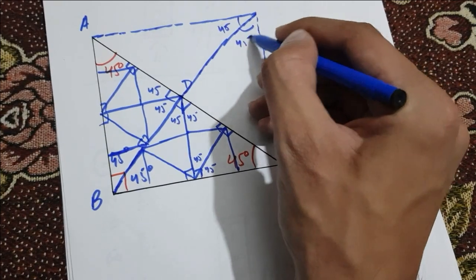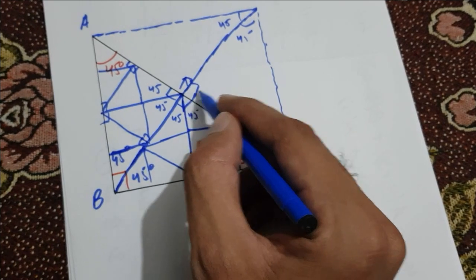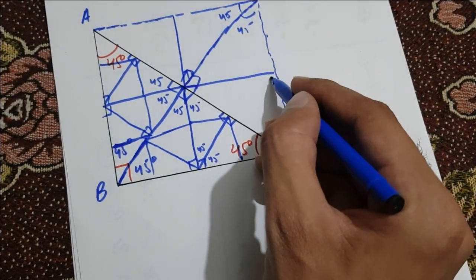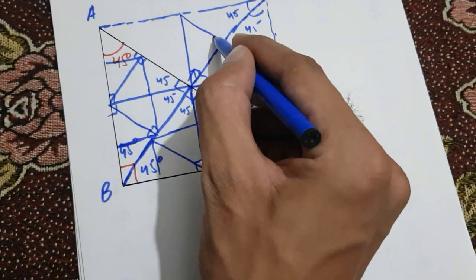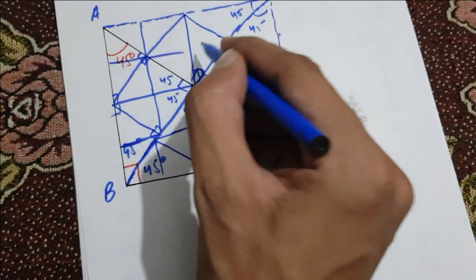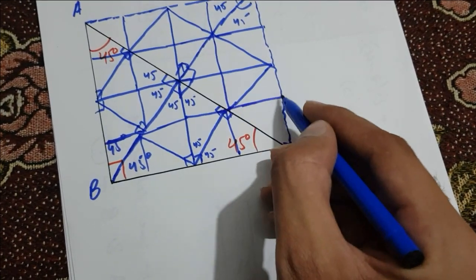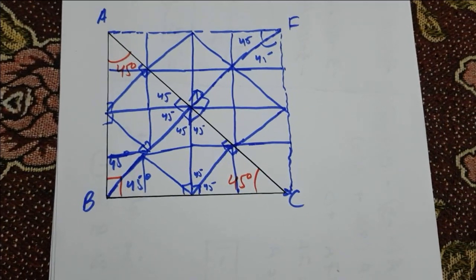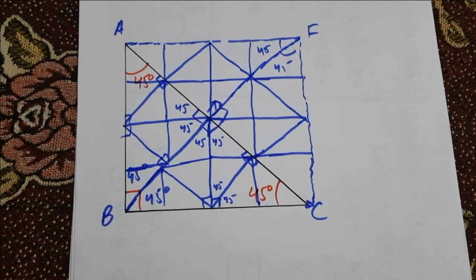You can continue this division of an isosceles right triangle further. We get two angles of 45 here and two angles of 90 here. Now continue dividing these right angles — we can get an infinite number of right triangles.